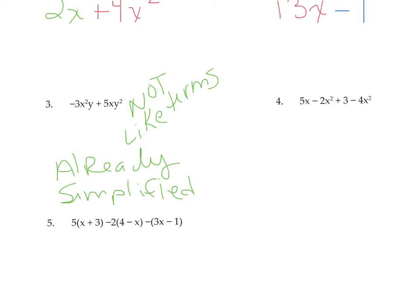On number 4, again we're identifying where the like terms are. Which terms have the same variables with the same exponent? Negative 2x squared and negative 4x squared are like terms. When I add them together, I get negative 6x squared — negative 2 plus negative 4 is negative 6. The other two terms are not like terms: 5x has an x term, but 3 doesn't. So they're just hanging on. So we have negative 6x squared plus 5x plus 3.